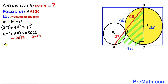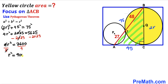We get 4r² = 3600. Dividing both sides by 4 to isolate r², the 4s cancel and r² turns out to be 900.